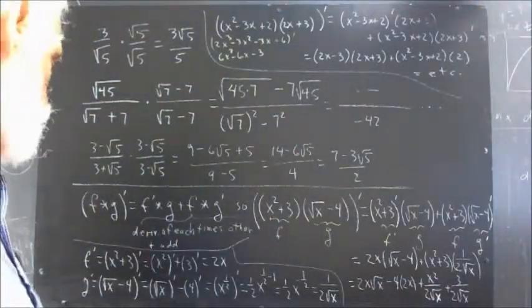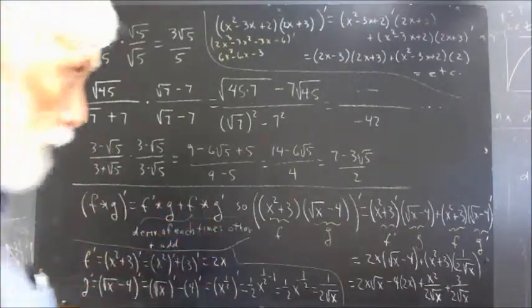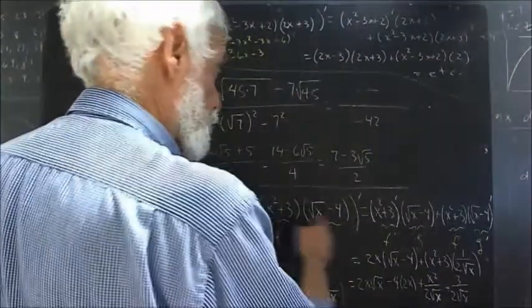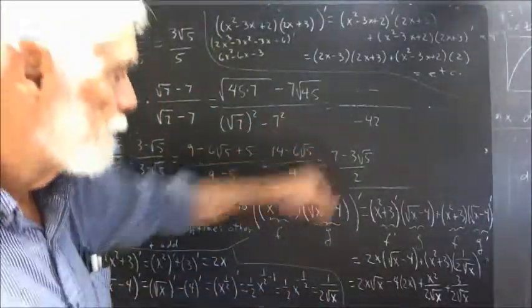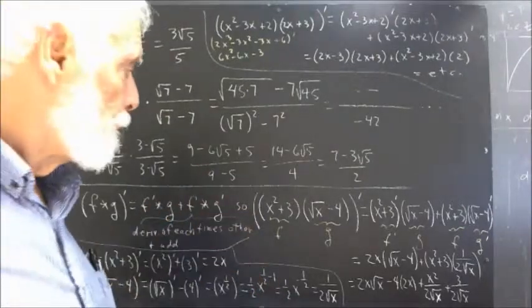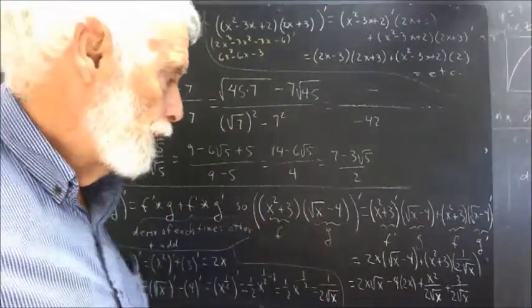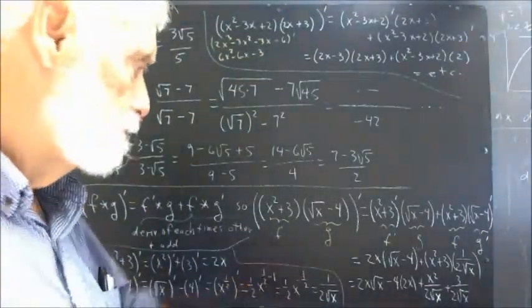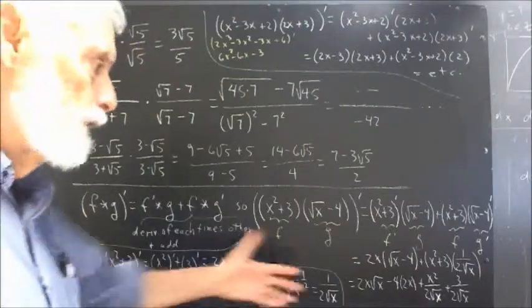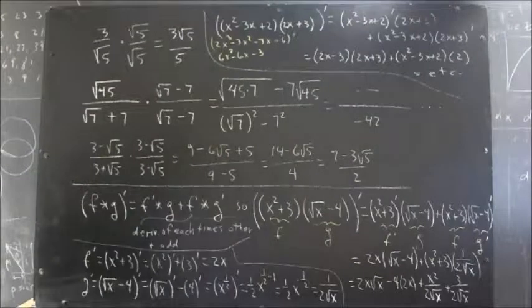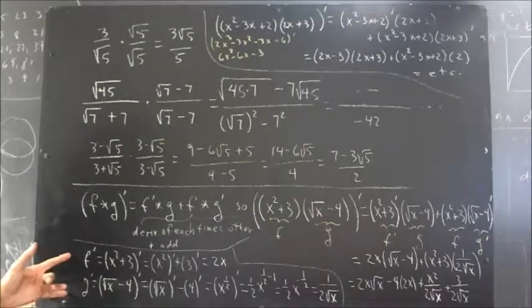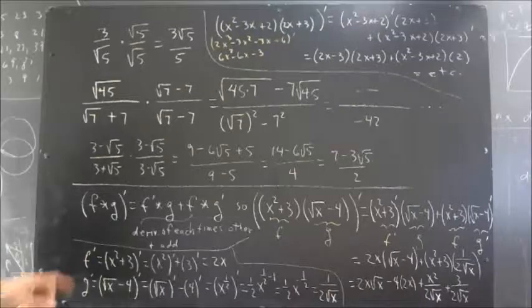We also could have done this whole thing by using the distributive law and multiplying all this out. We would have gotten 4 terms — 4 power functions — and we would have been able to take the derivative of each separately, obtaining the same result. You can verify that if you wish. Over here, we do the calculation of f prime and g prime in a little more detail.